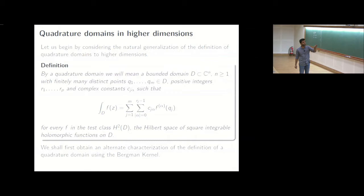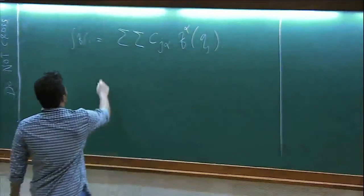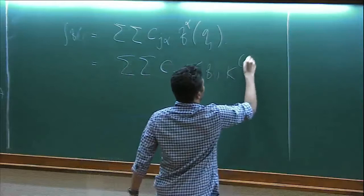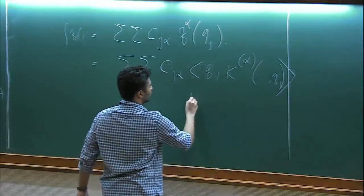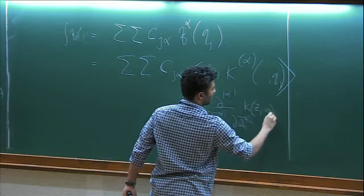This now just becomes a multi-index notation where f alpha basically means d to the mod alpha by d z1 alpha 1 over d z1 alpha. So the first thing I would like to do is to get a recharacterization or a characterization of this particular identity in the language of Bergman kernels which was introduced today in the morning by Professor Kengo Hirachi. And to do that let's focus on what is the identity that we have. What we have is integral of f, so with respect to the volume measure.